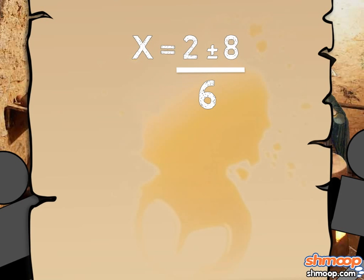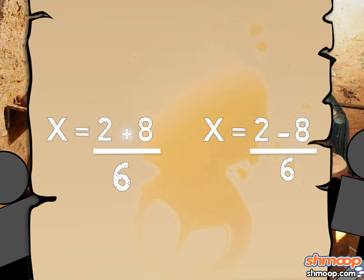And since our equation is plus or minus, we have two equations now. x equals 2 plus 8 over 6, and x equals 2 minus 8 over 6.